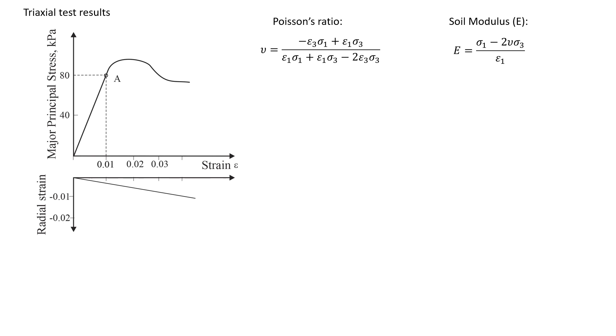In this case we will use two formulas. This one for Poisson's ratio. You see there are a few symbols here. Don't be scared. I am going to explain what it means.